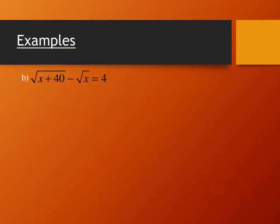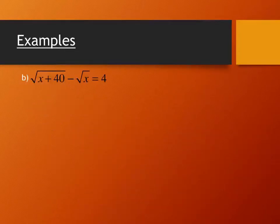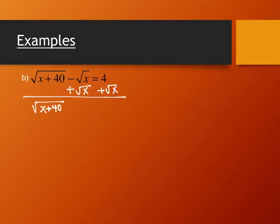Now let's look at another example in this category. This one has two square roots. As much as it would be nice to just square each individual piece, we can't do that — just like we can't square individual terms in a binomial. The easiest approach is to first move one of the square roots to the other side, separating our radicals so one radical is alone on each side.